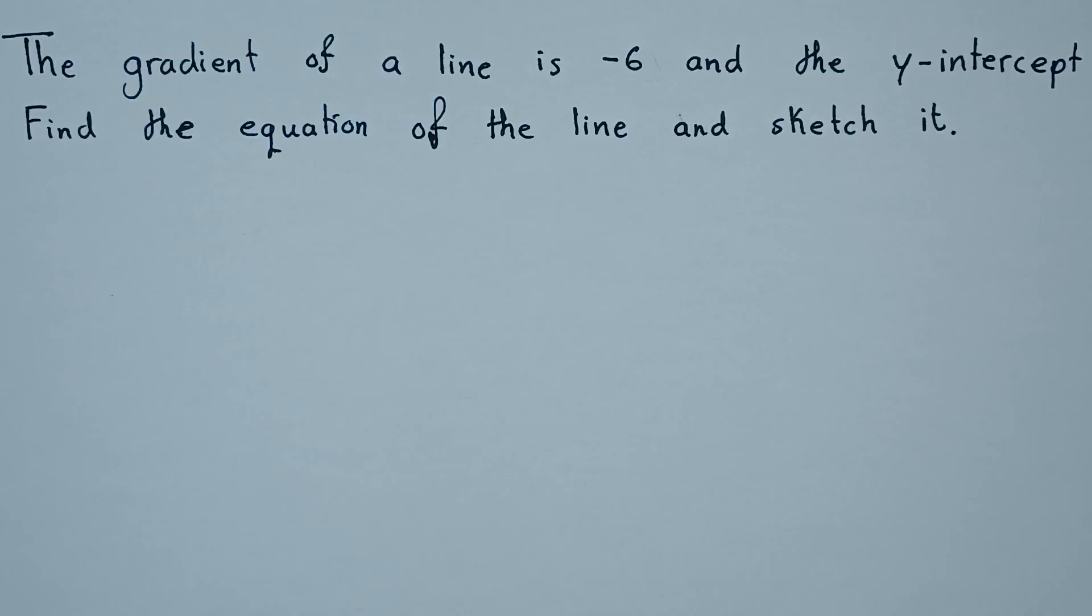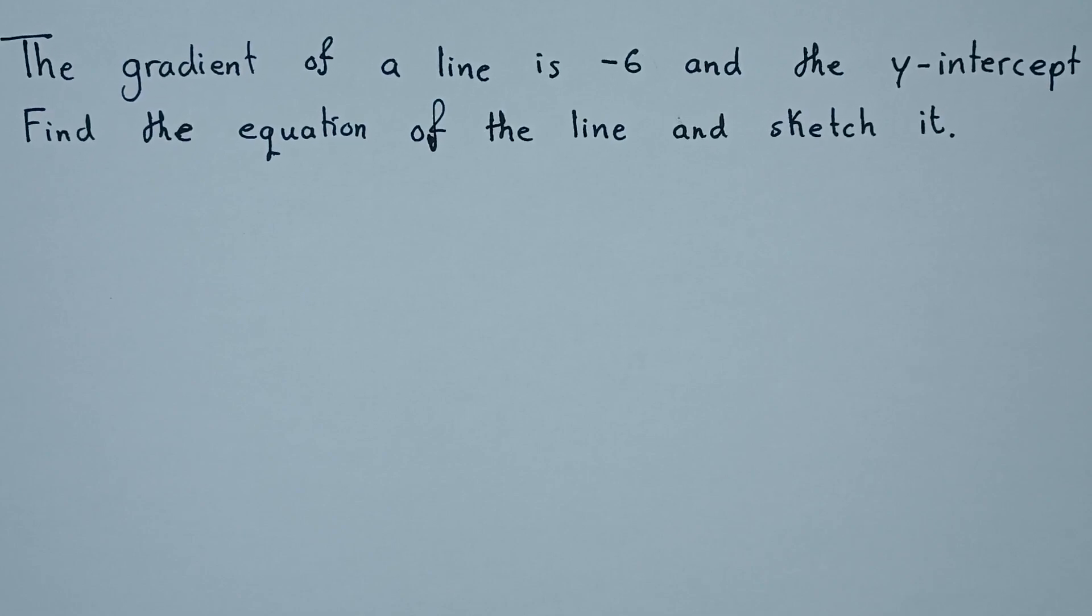So how do we solve this question? We have the gradient of the line which is negative 6 and the y-intercept is 2. We need to find an equation of the line and I want to see how we can sketch it as well.